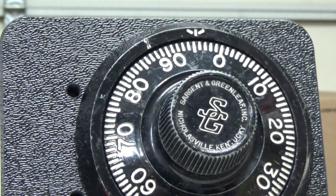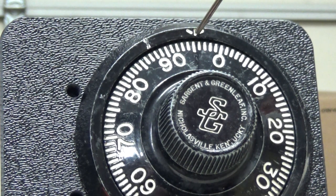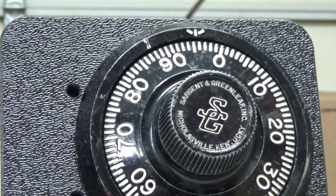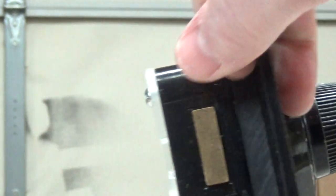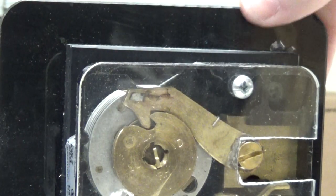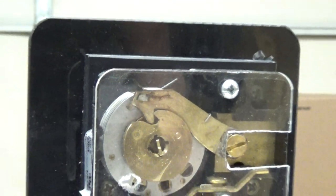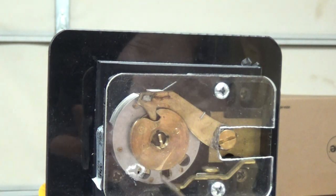In order to dial that if you have a code that's 20-40-60, you would dial it here to open the safe. You would dial it here and what it does is actually makes the back lugs work on the changing index which is this hole here.